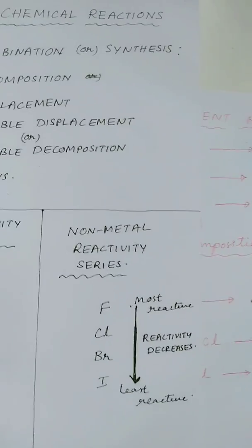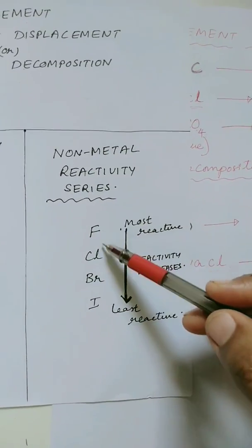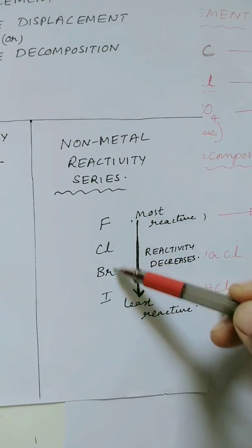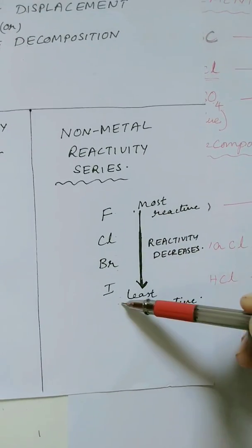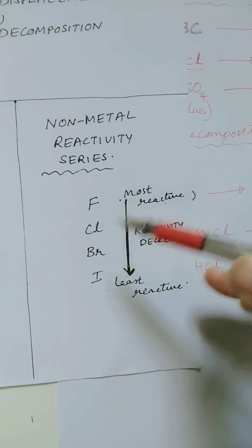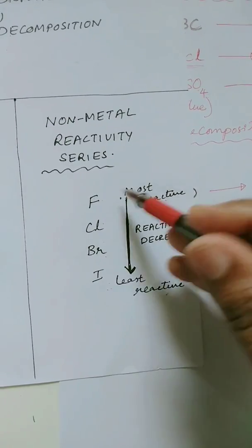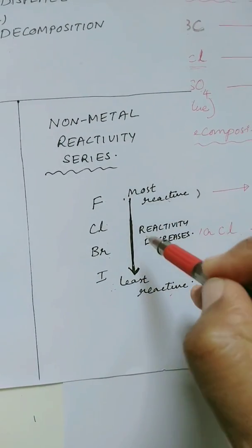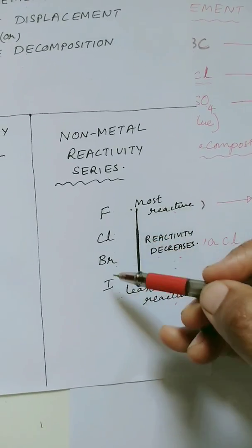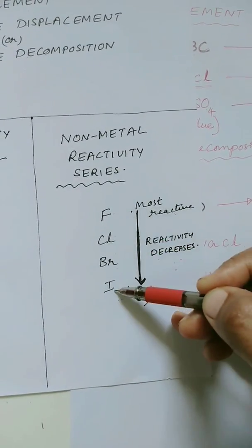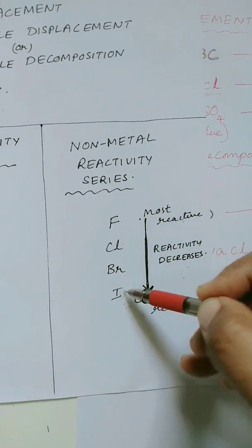There is a reactivity series of non-metals also. You can see here, this is the simple reactivity series of the non-metals: fluorine, chlorine, bromine, and iodine. Fluorine is the most reactive and iodine is the least reactive. As you go down, the reactivity decreases. So in any equation, if there is fluorine and iodine, fluorine will displace iodine from its compound.